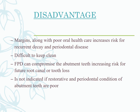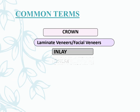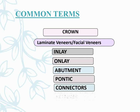The common FPD terms covered in the learning outcomes are: crown, veneer, inlay, onlay, abutment, pontic, connector, and retainer. Pontic, connector, and retainer are separate topics to be covered in detail later.